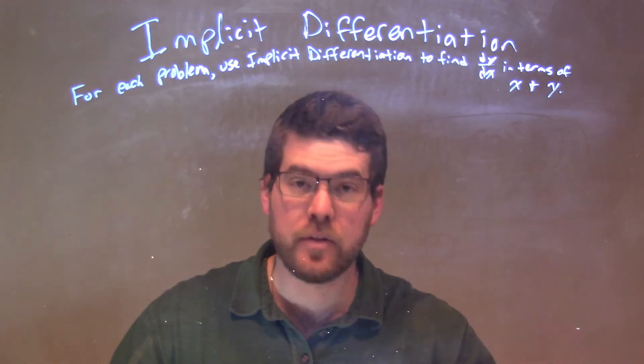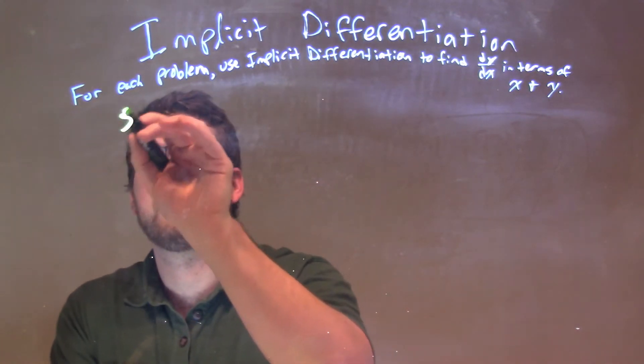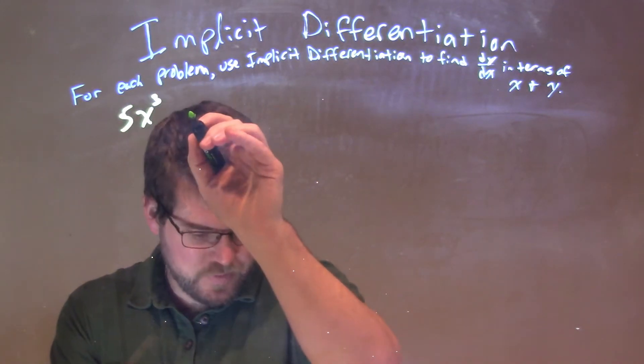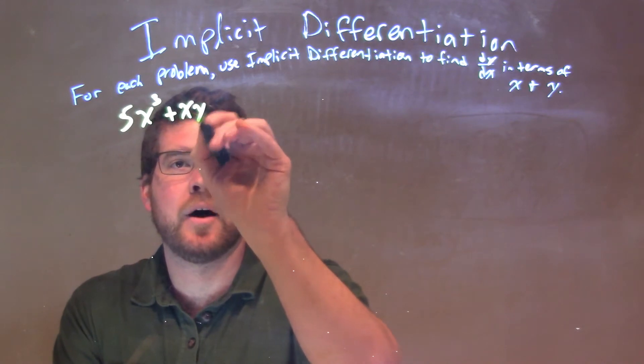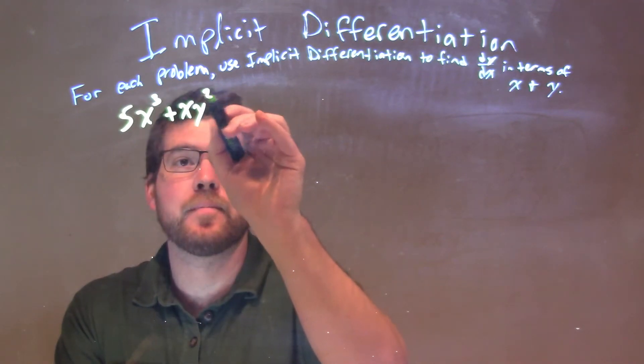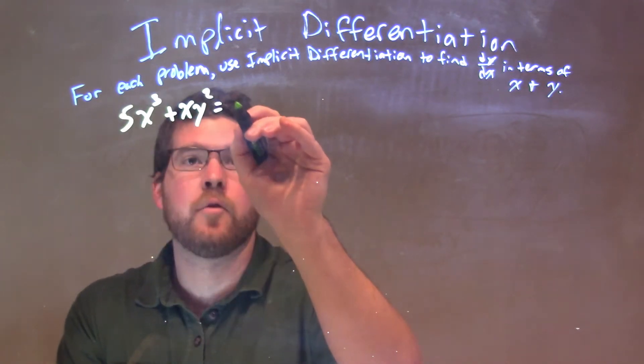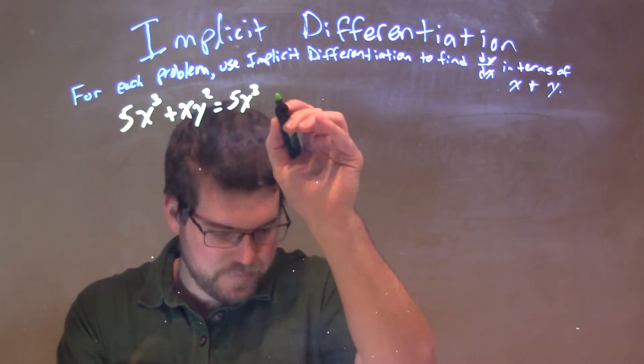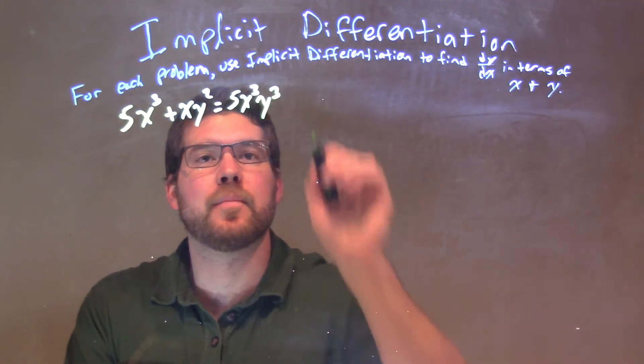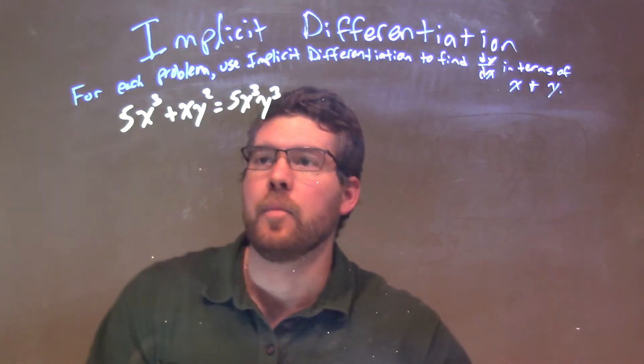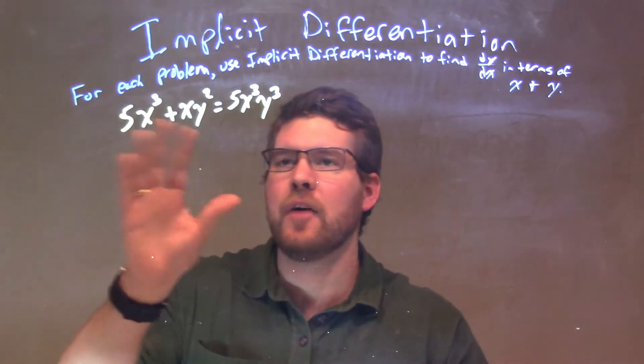So, if I was given this problem, 5x to the third plus xy squared is equal to 5x to the third, y to the third. So, from here, I'm going to derive both sides.